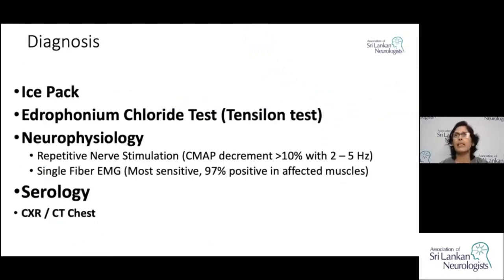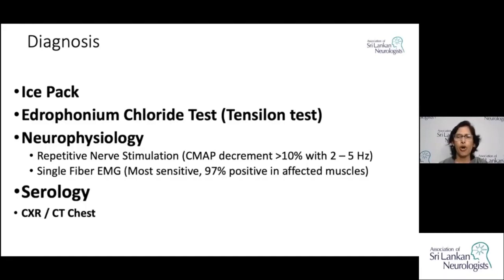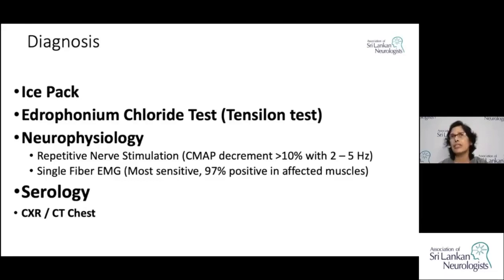The ice pack test is a sensitive bedside test — the patient closes the eye, an ice pack is applied for five minutes, and improvement in ptosis is observed. The edrophonium (Tensilon) test was a very useful clinical test. In neurophysiology, repetitive nerve stimulation showing more than 10% decrement of the compound muscle action potential at 2-5 Hz stimulation is significant. Single-fiber EMG has very high sensitivity but requires expertise.